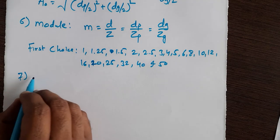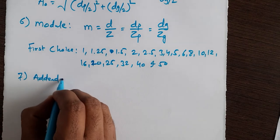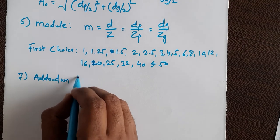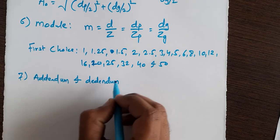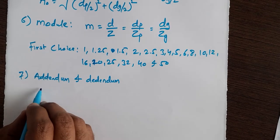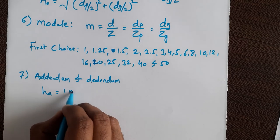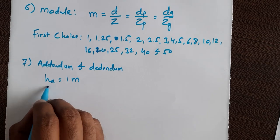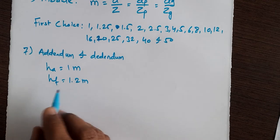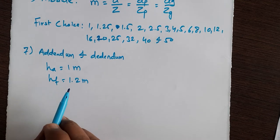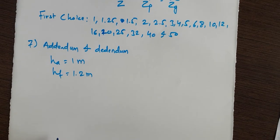The next terminology is addendum and dedendum, denoted HA and HF respectively. Addendum HA is equal to 1 module, and dedendum HF is equal to 1.2 module. In this way you can calculate addendum and dedendum at the large end of the teeth.